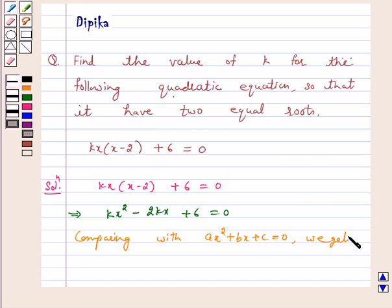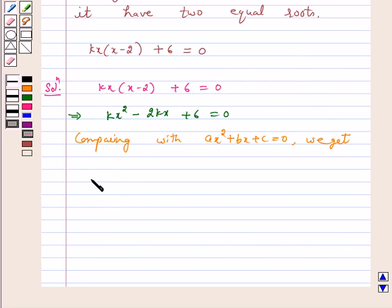We get a is equal to k, b is equal to minus 2k, and c is equal to 6.